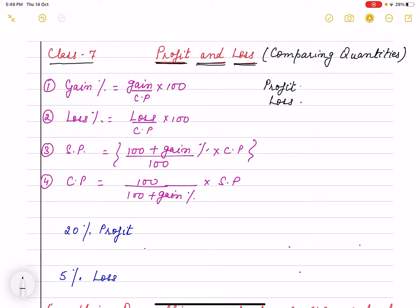So here we have done that what is the profit percent. Profit percent is profit. Profit is what? Selling price SP we write minus CP. Loss is what? CP minus SP.